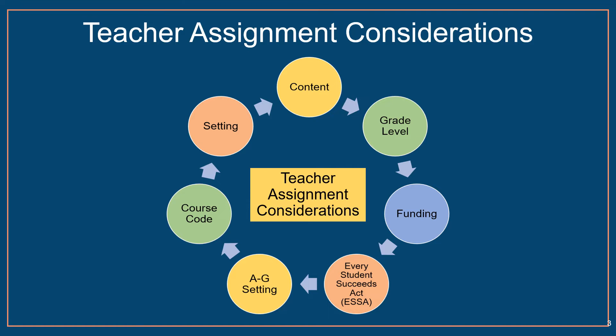There are several factors that employers must consider in order to ensure an appropriate and legal educator assignment. Some of these factors may be directly linked to the documents issued by the Commission of Teacher Credentialing, including the setting, content, and grade level that the teacher is teaching. Others may be influenced by outside sources such as the California Department of Education, State Board of Education, California Public University System, or U.S. Department of Education, including course credit, A-G credit, SSIP reporting requirements, and how a particular course is funded.